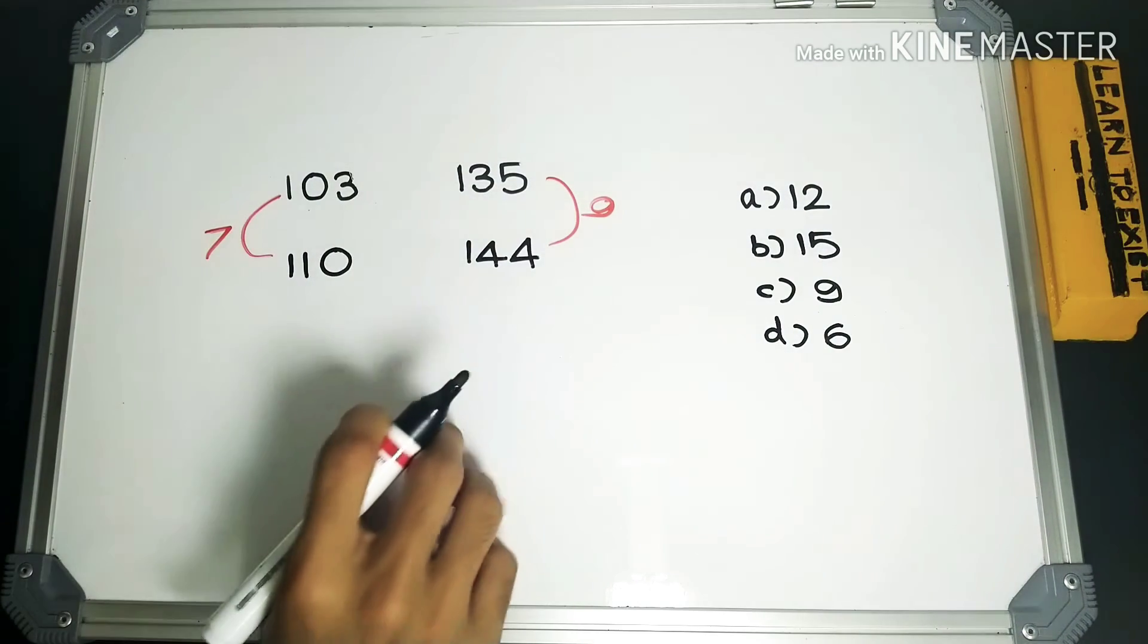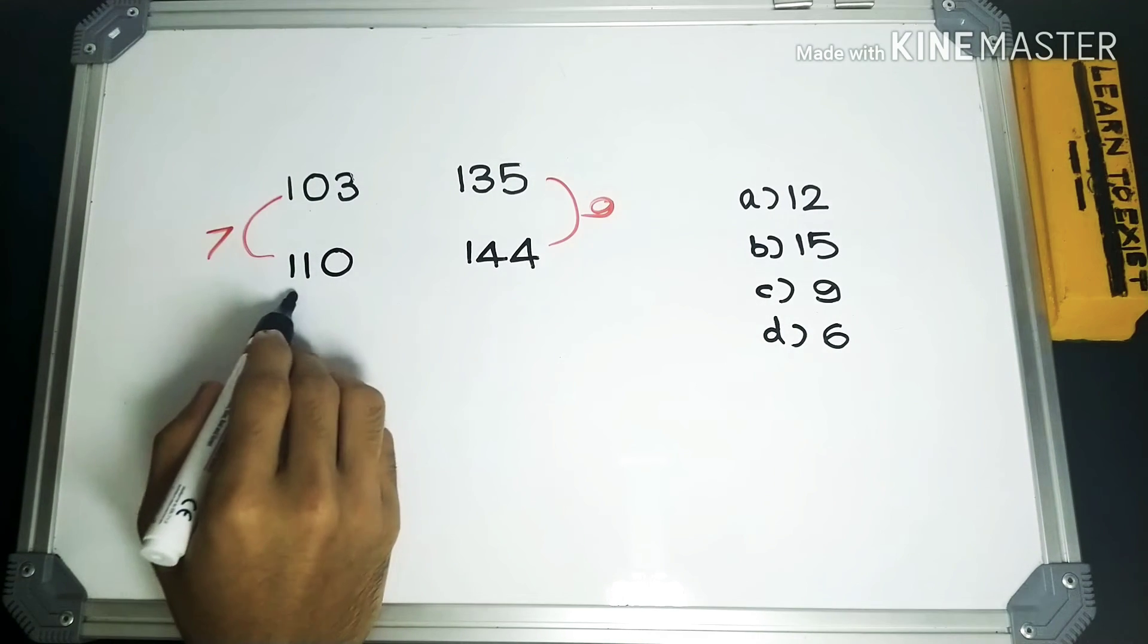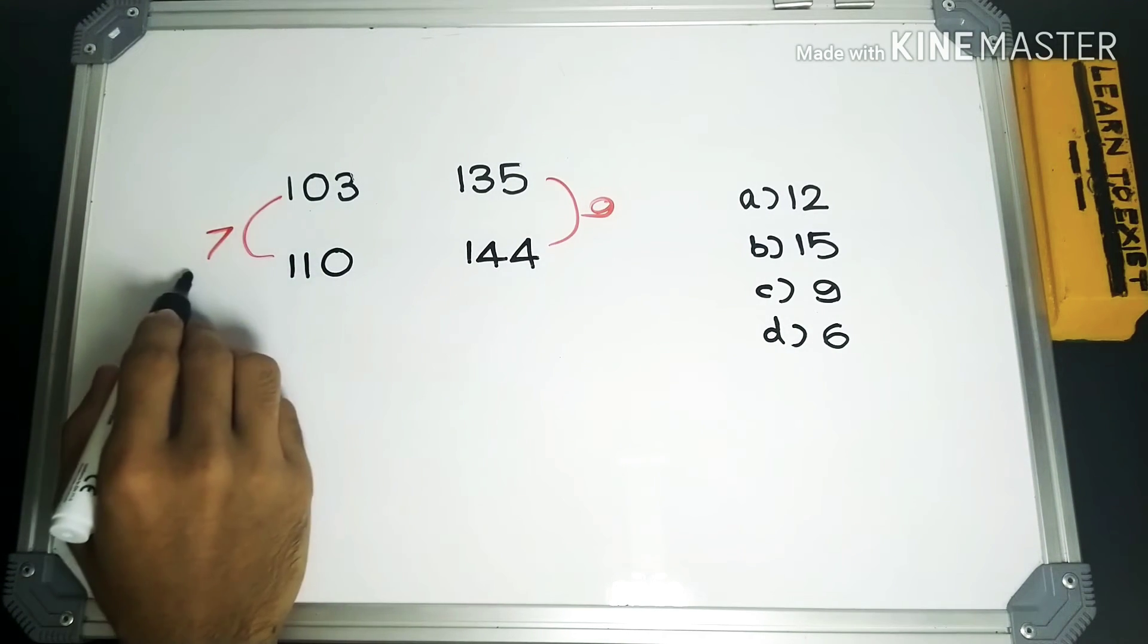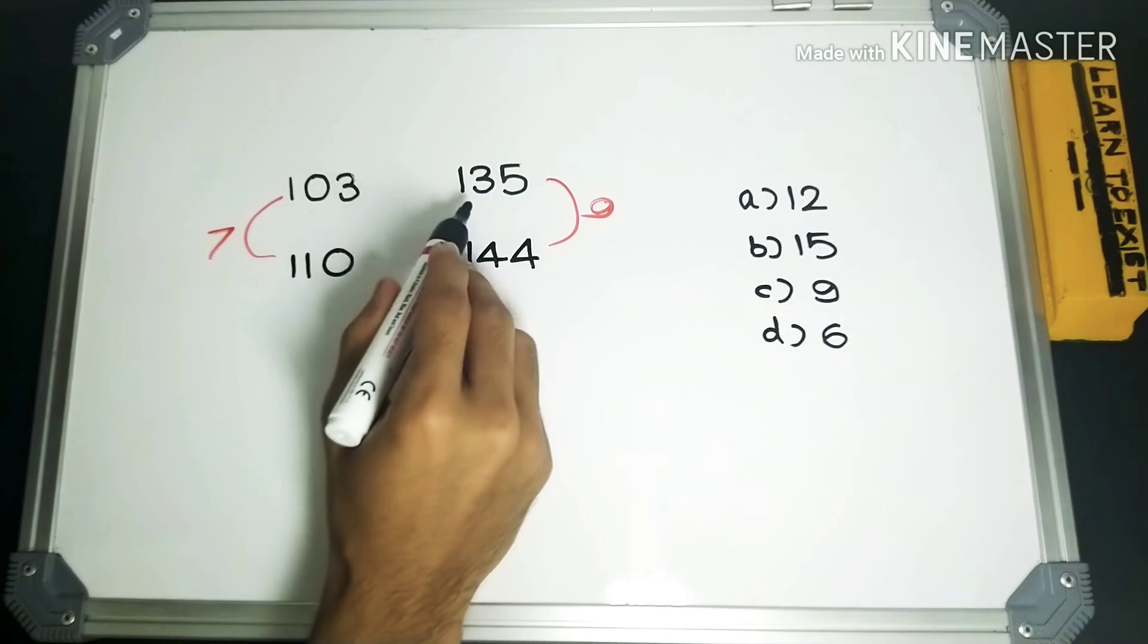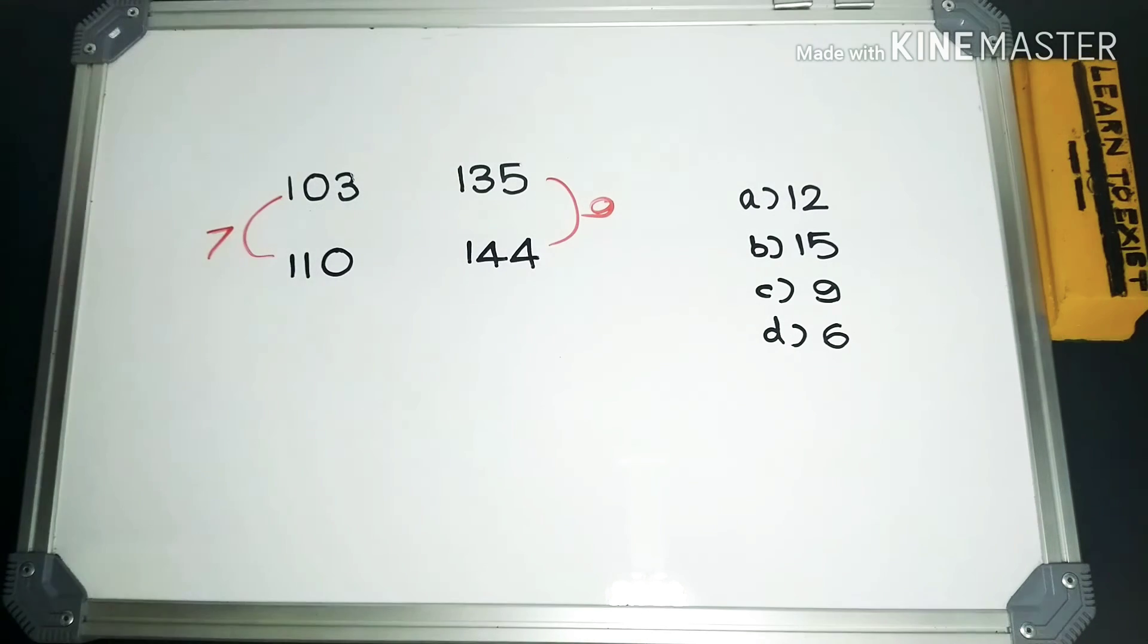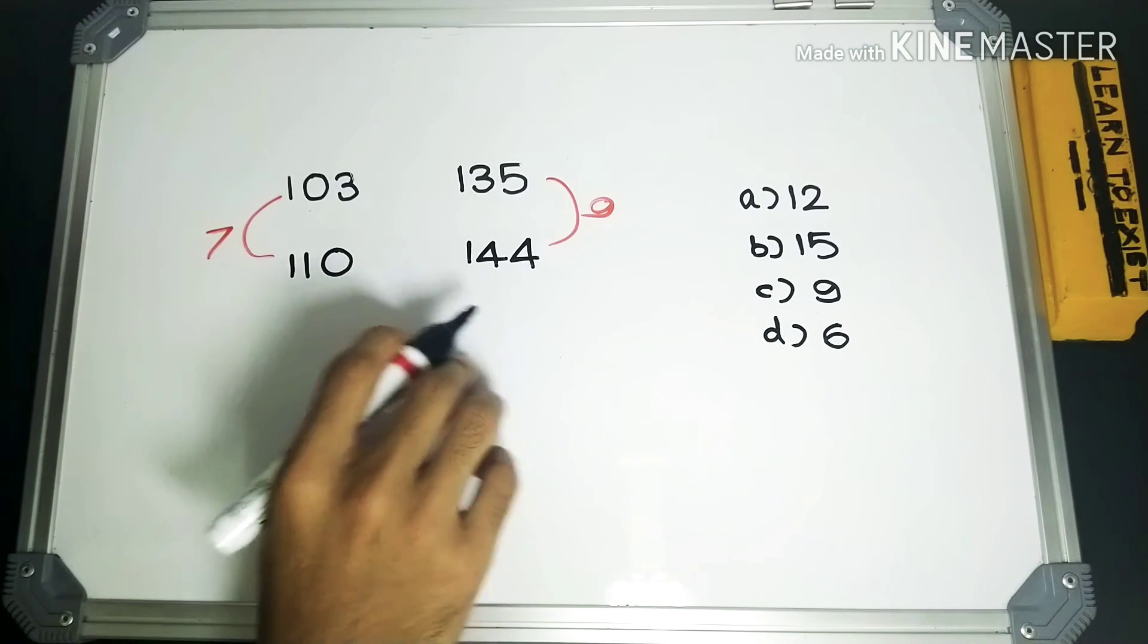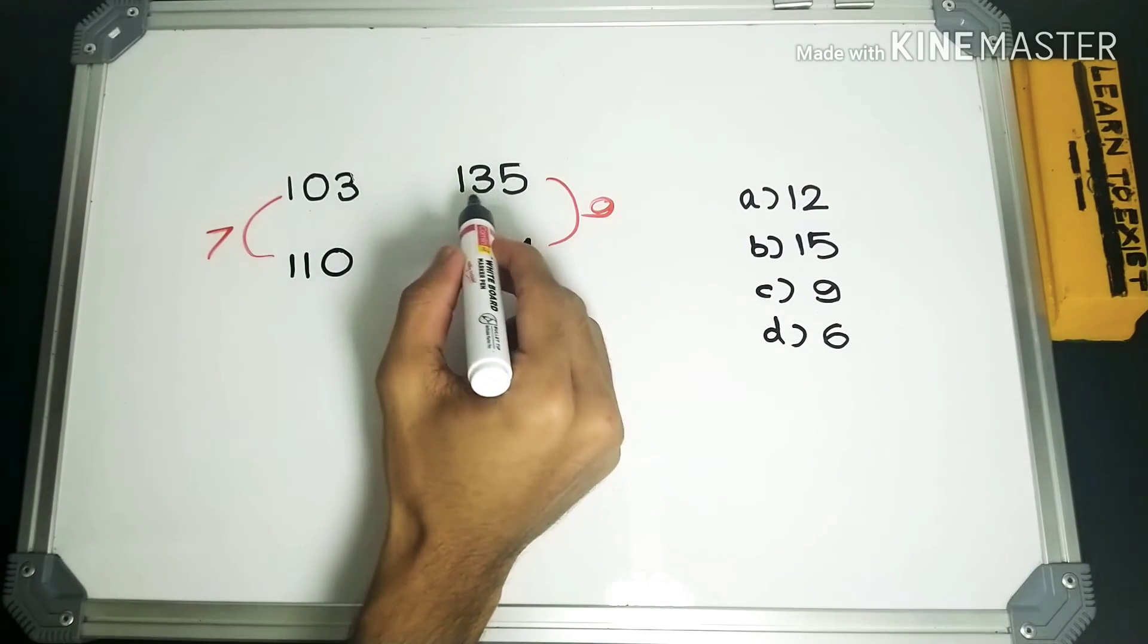Now what do I have to do? Which of these four options when added with 103 or 110 will make it a multiple of 7, or if added with 135 or 144 will make it a multiple of 9? We can check it in four of these ways. I will go with the easy one, and the easy number will be this one.